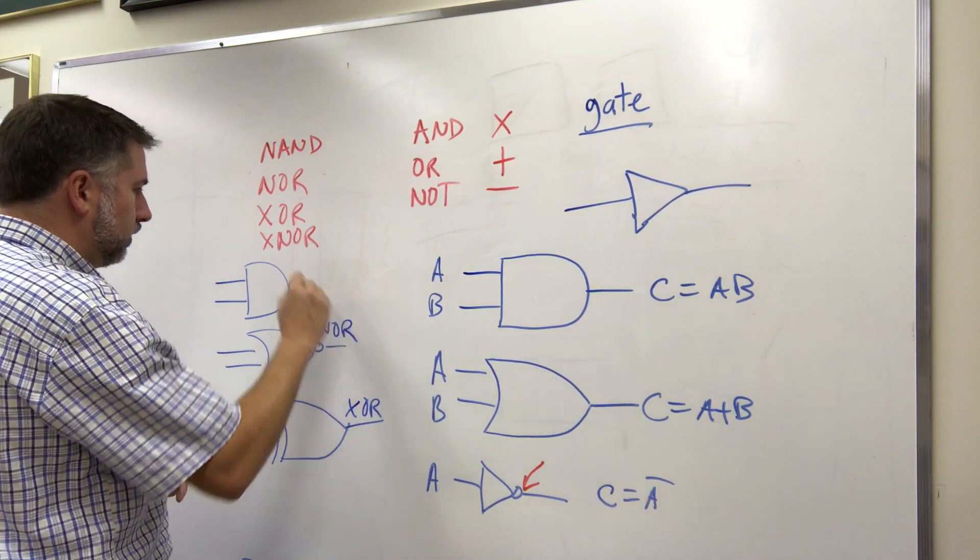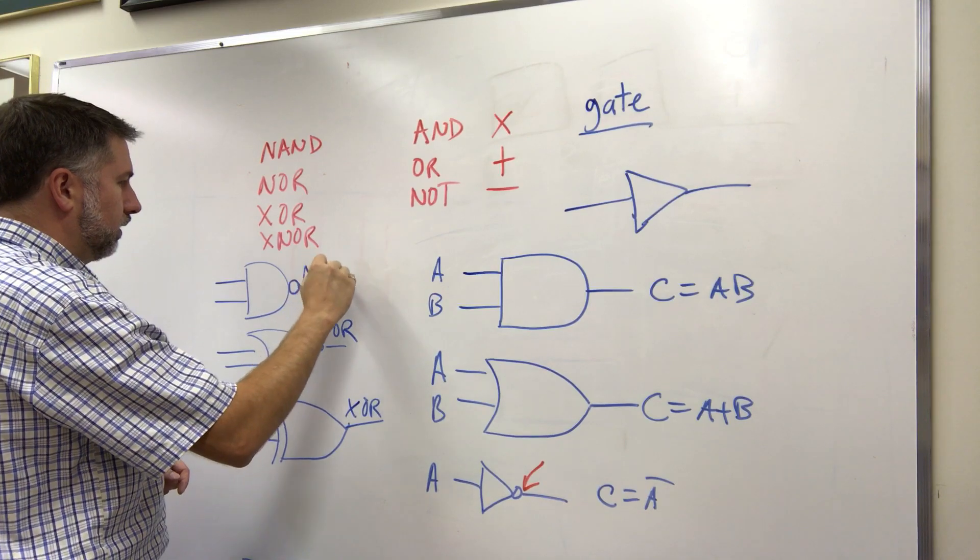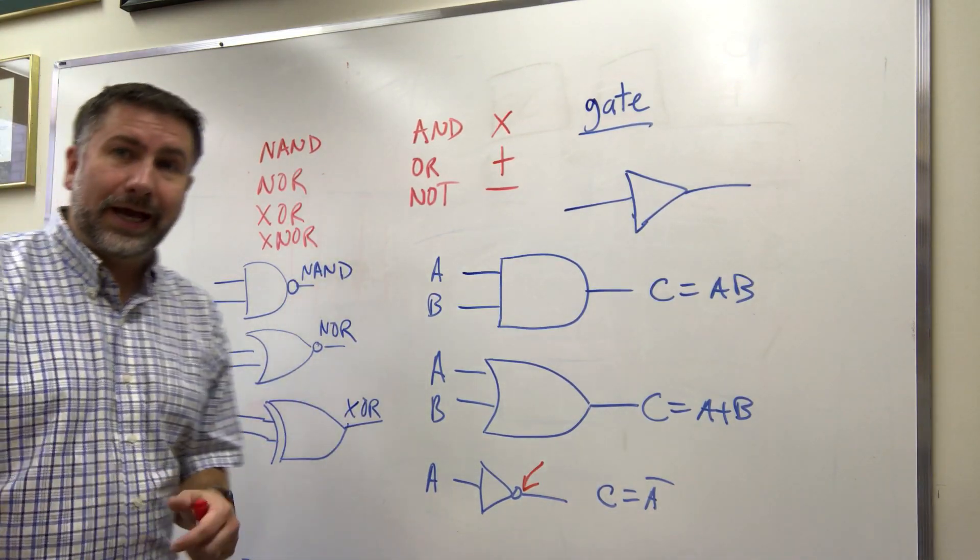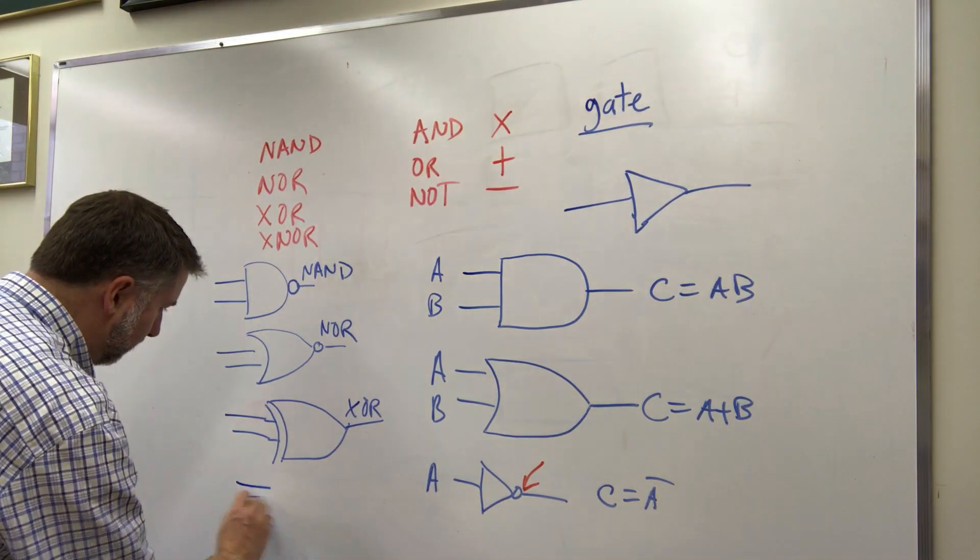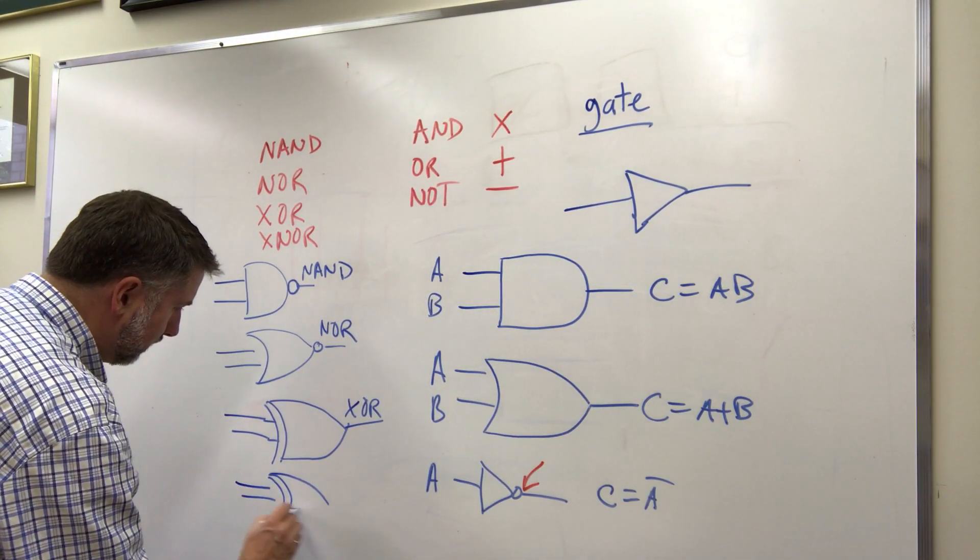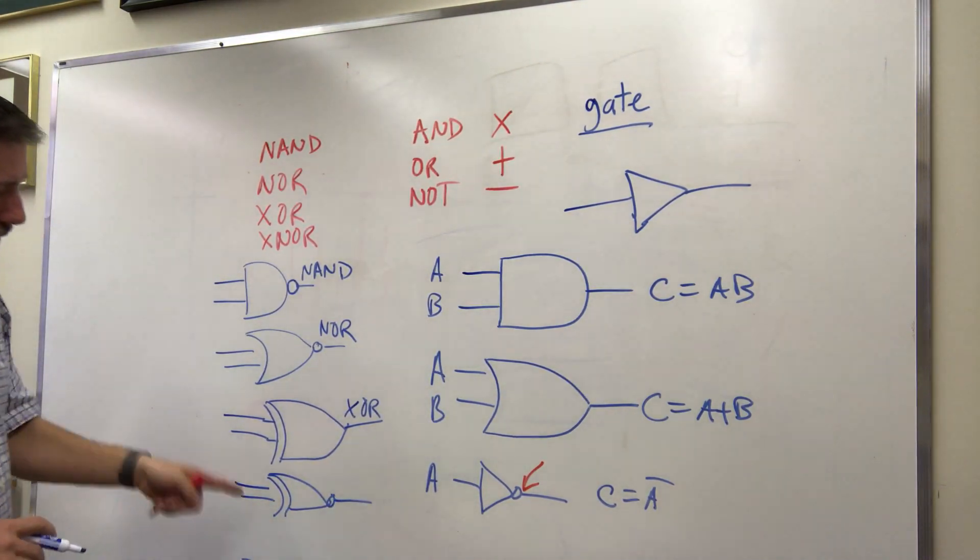This is NOR, this is NAND, this is exclusive OR and exclusive NOR is just that with a dot on it. I think I might be able to fit that in here like that. Exclusive NOR.